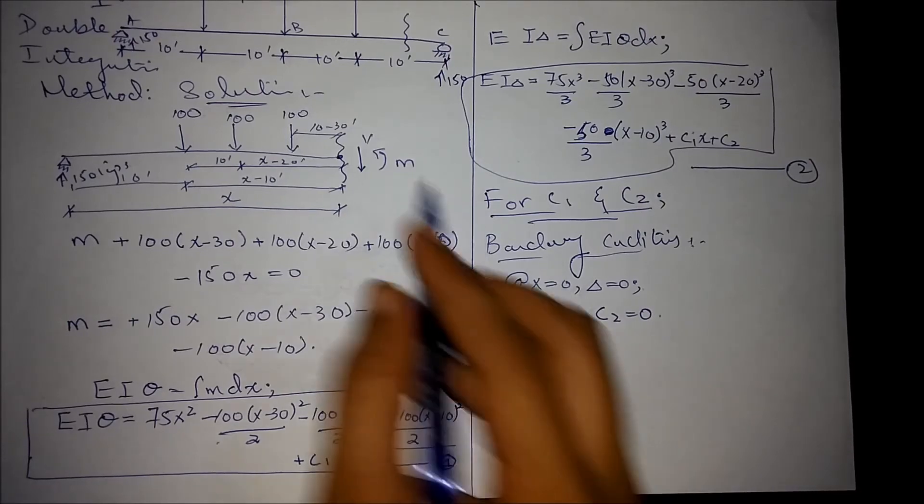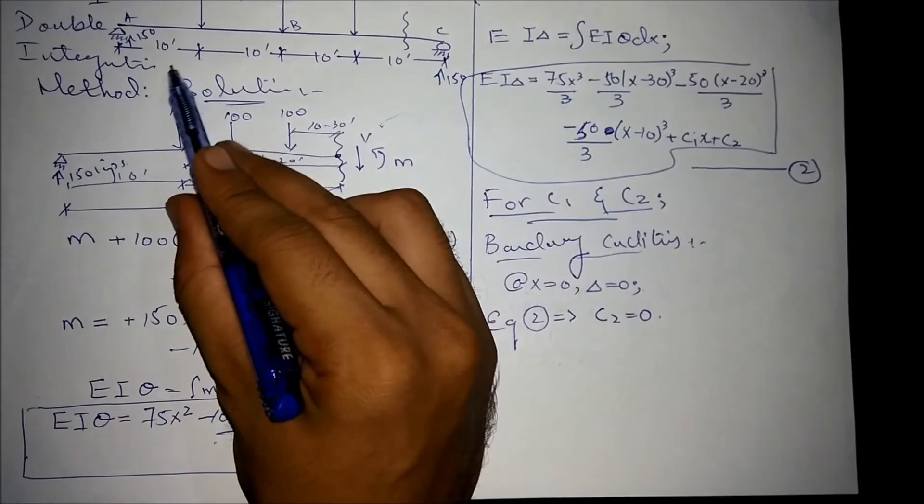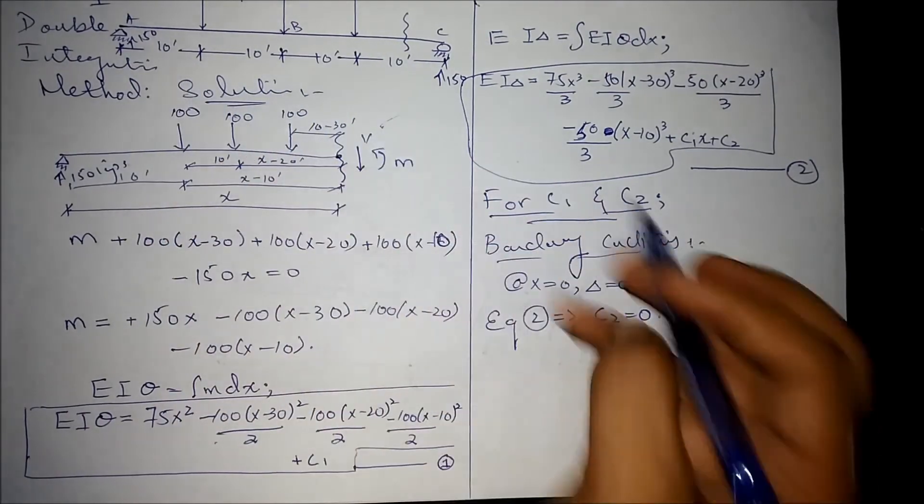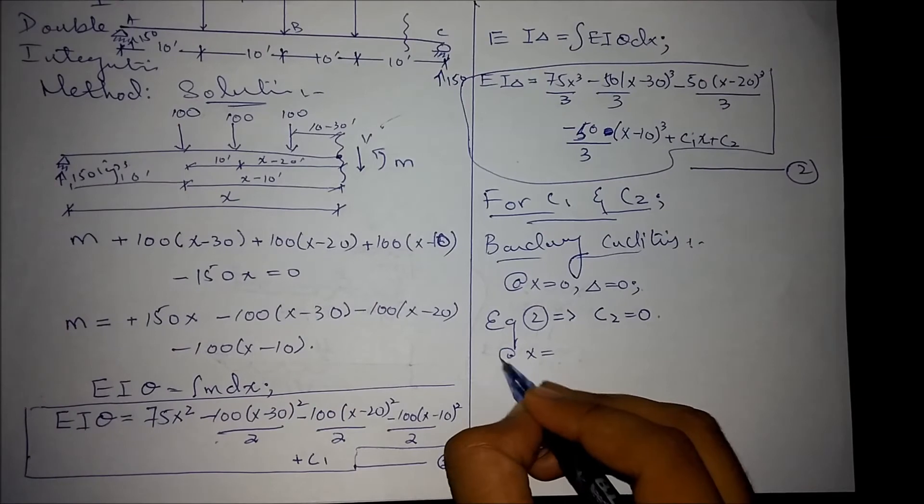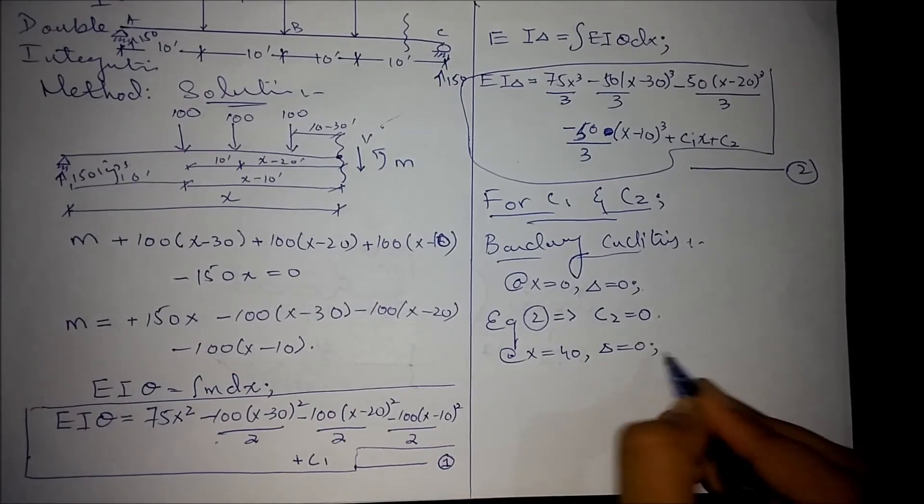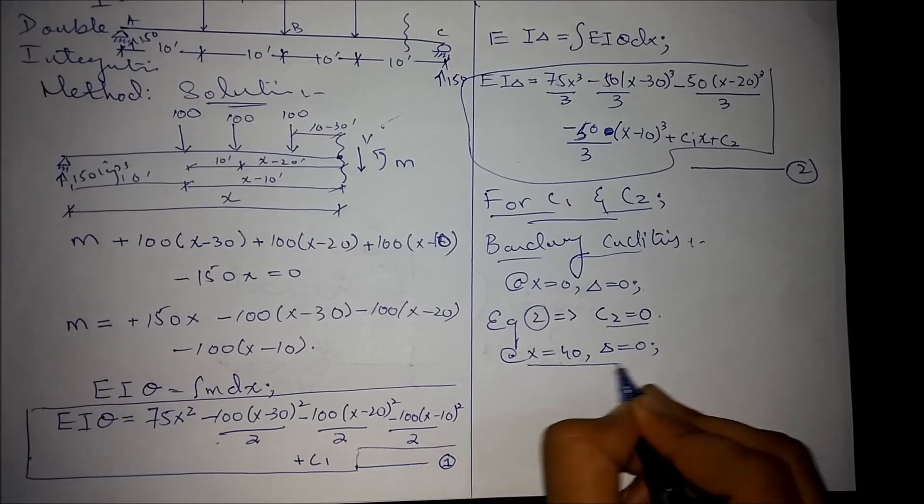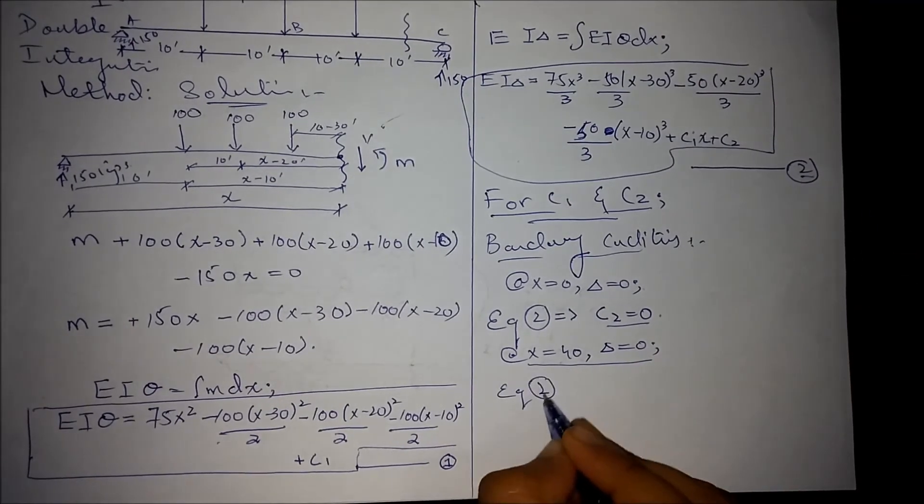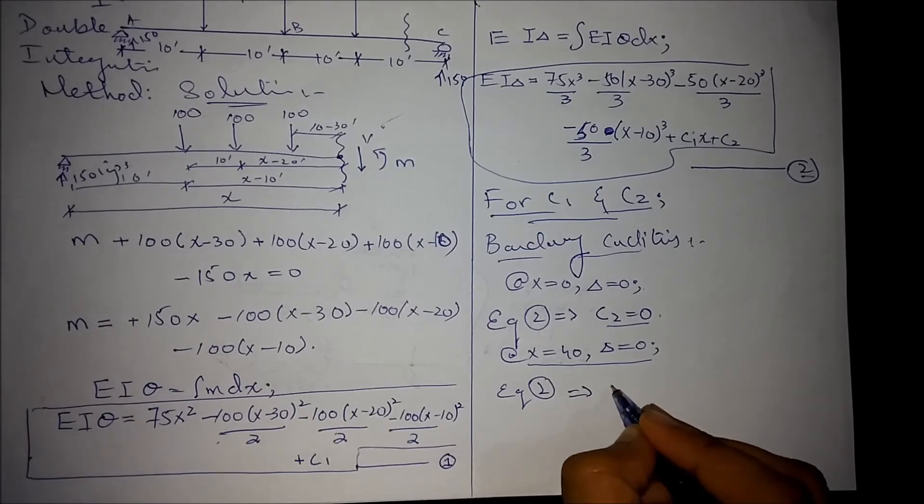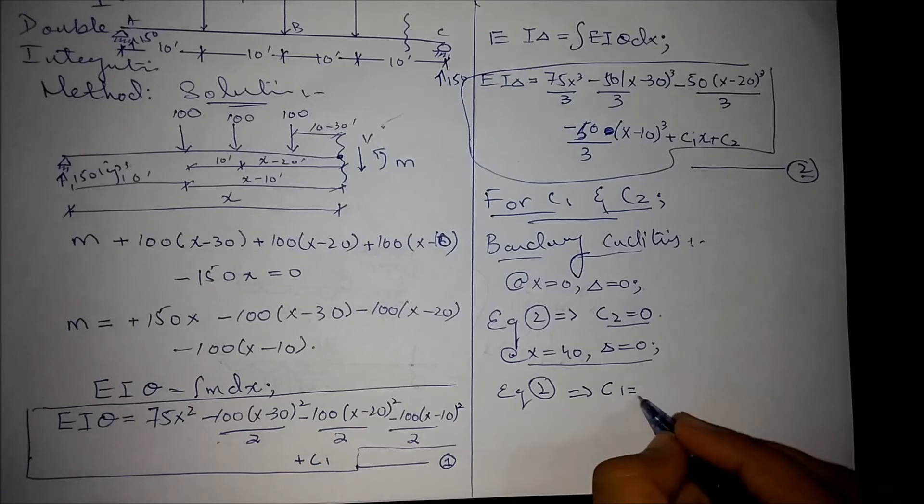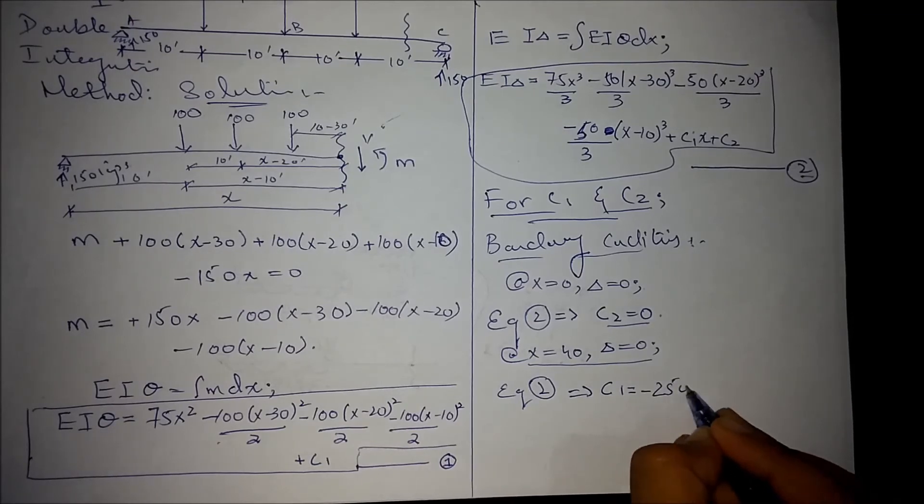Now we know that deflection at x is equal to 40 feet, at x is equal to 40 feet, deflection is again 0. So putting this value and these two values in equation number 2, we get c1 as minus 25,000.